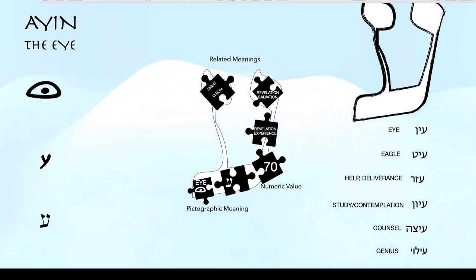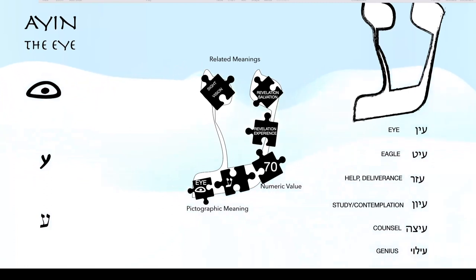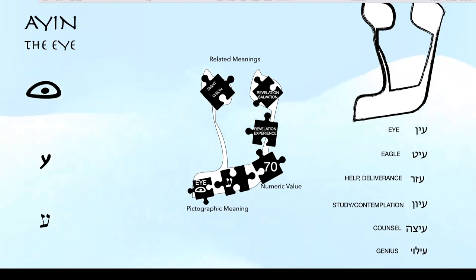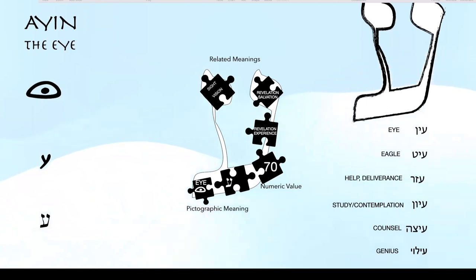When you see the Ayin, I want you to think of that whole picture. We have the word ayin for eye. We have ayit — the eagle, which is known for tremendous eyesight. We have the word ezra, which is help or deliverance or salvation. We have the concept of studying or deeply studying — there's lilmod, which is to learn something, and then this deeper concept of really studying and getting down to the understanding. We have etzah, which is counsel — from the idea of giving advice or a deeper understanding of something. And then the last one is ilui, which is a genius — somebody who's really intelligent, has a depth of understanding, and sees clearly things on levels that others may not.